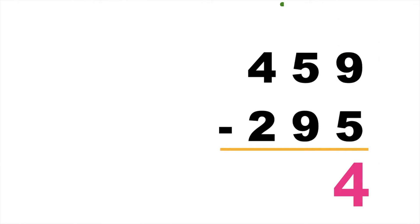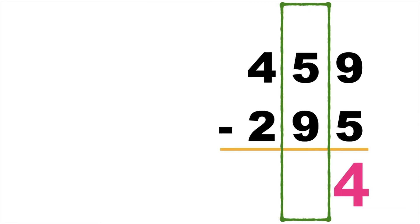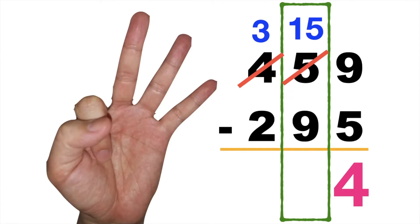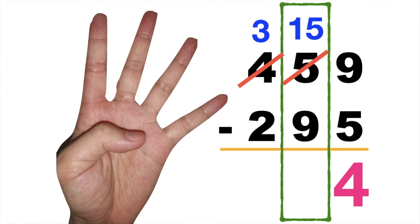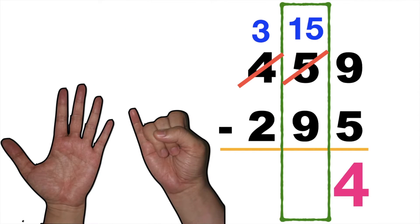Let's proceed to the tens place. 5 minus 9 — since the top number is smaller than the number at the bottom, we need to borrow 1 from 4. 4 will become 3, then 5 will become 15. Counting forward: 9, 10, 11, 12, 13, 14, 15. So 15 minus 9 is equal to 6.